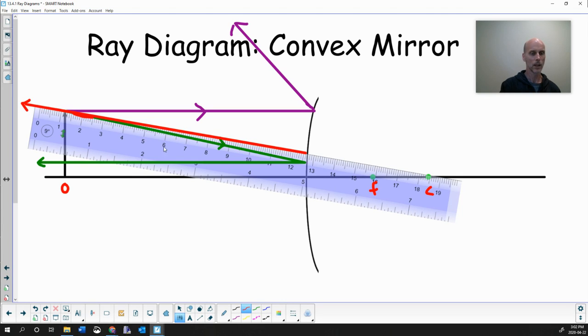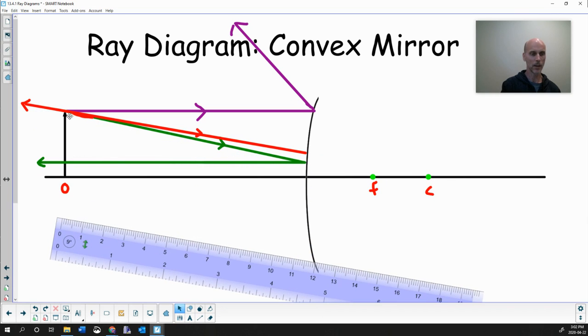So it was headed towards this mirror. It's hard to tell now, but when you see it happen, you understand this ray in red was headed towards the center of curvature, hit the mirror and bounce straight back. So now we have our three rays.